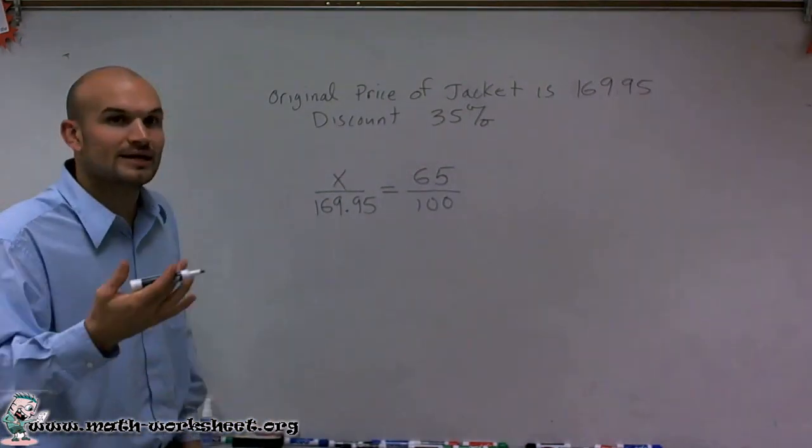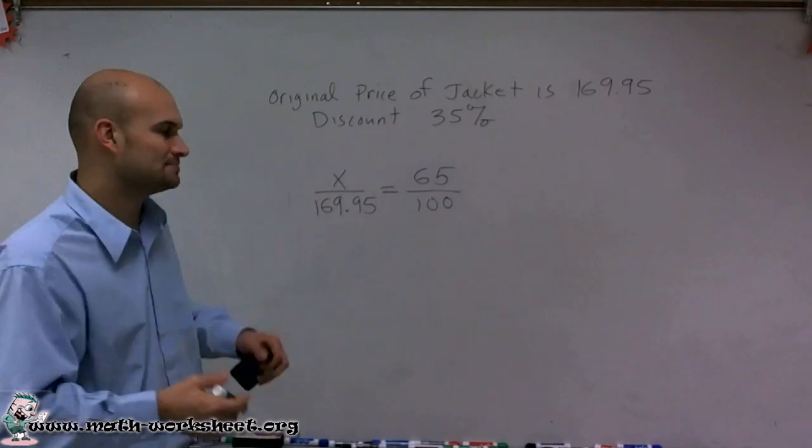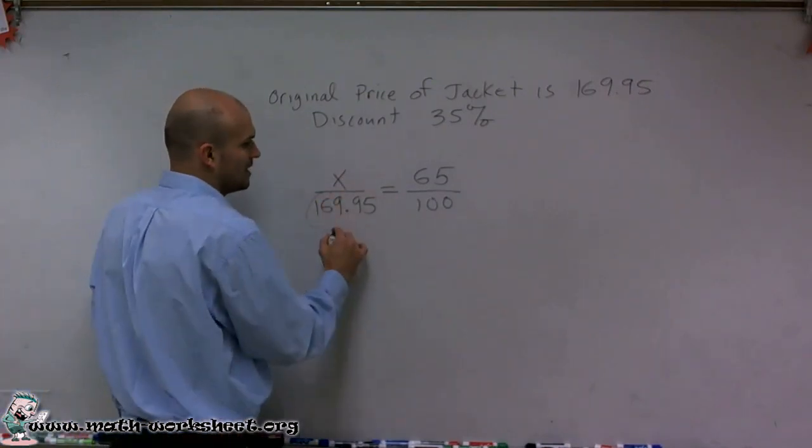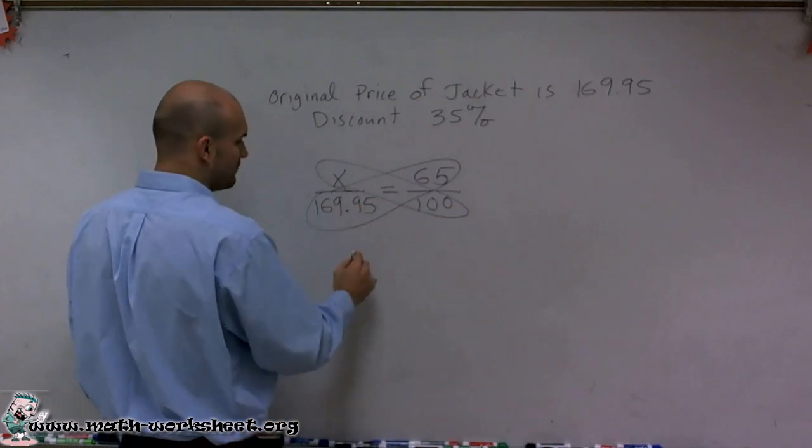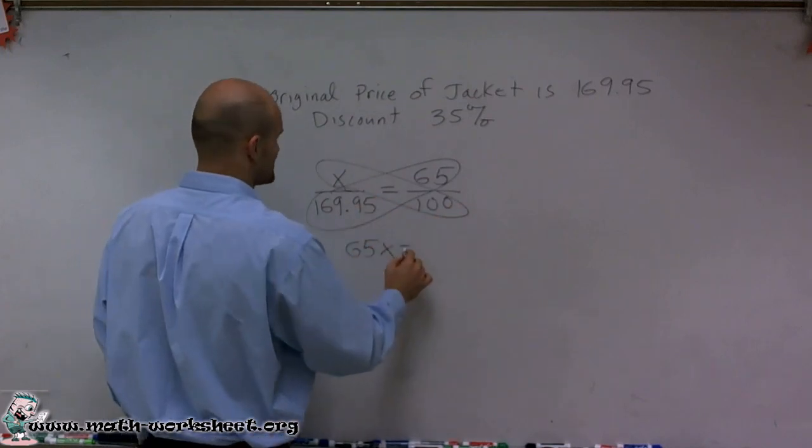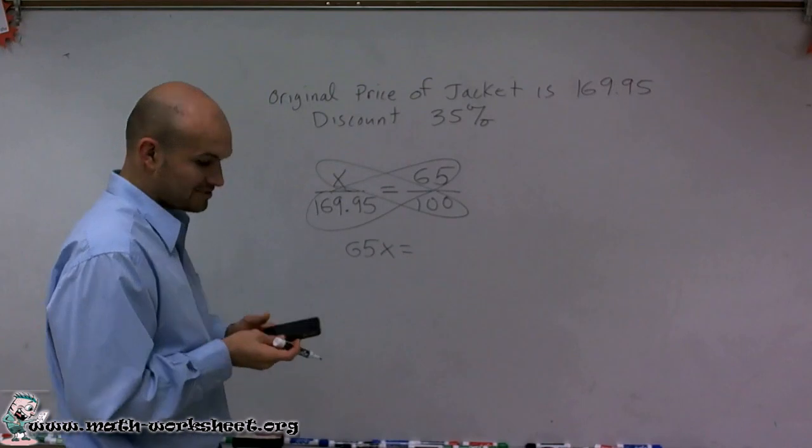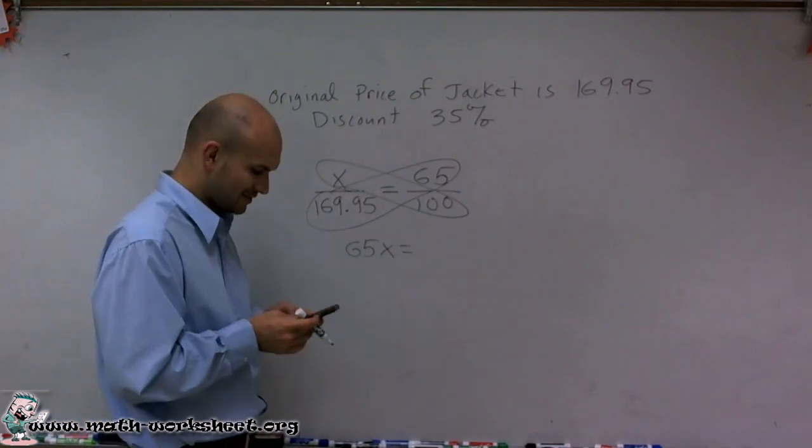So now what I can do is to solve this, I can just solve proportions. I can cross multiply. And therefore what I'll have is 65X, which is equal to, and I'm just going to use my handy calculator here.